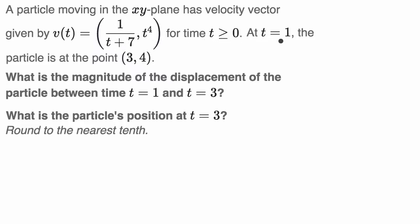At t equals one, the particle is at the point three comma four. The first part asks for the magnitude of the displacement of the particle between time t equals one and t equals three. We also need to figure out its position, rounded to the nearest tenth.